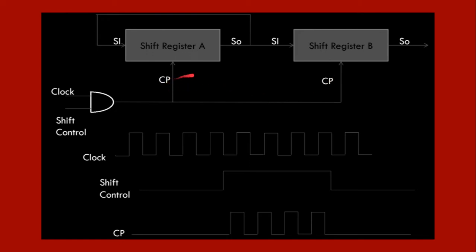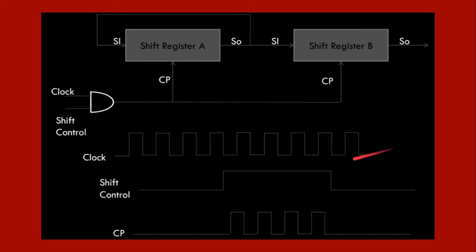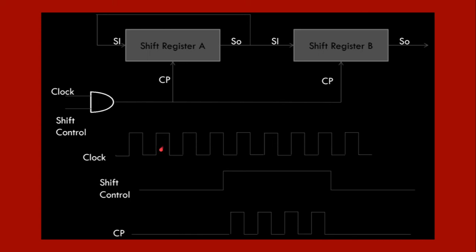The clock waveform is a square wave cycling between low and high levels. The shift control signal has its own low and high periods. The shift takes place only when both the clock and the shift control are high — because the AND gate requires both inputs to be high. When the shift control is low, one input to the AND gate is zero, so the clock pulse has no effect and no shifting takes place. Only when both the shift control and the clock pulse are high does the shift actually occur from one register to the other.